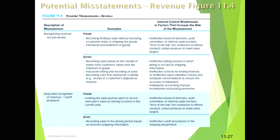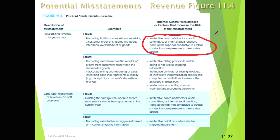A lot of times when we see fraud, the issue is usually around the control environment or monitoring — those are the control weaknesses that make fraud more likely. Errors, on the other hand, tend to be more closely related to specific, ineffective control activities or lack of controls, such as not having qualified personnel in accounting functions, rather than control environment issues.